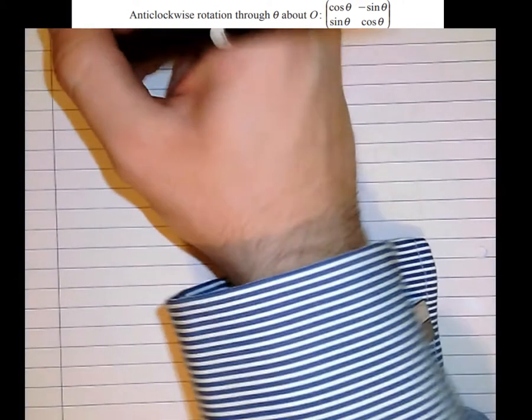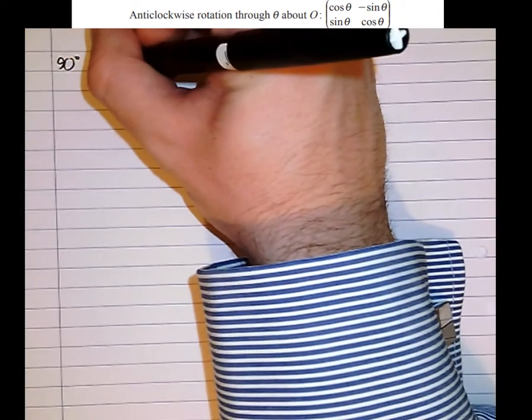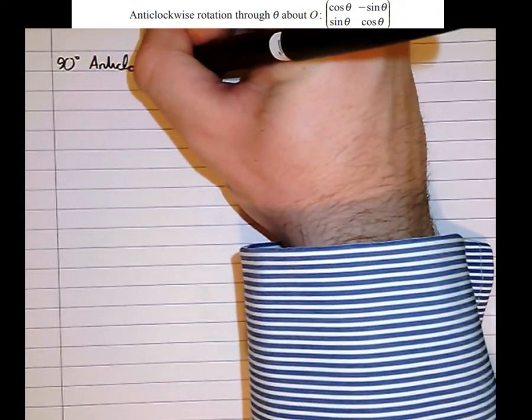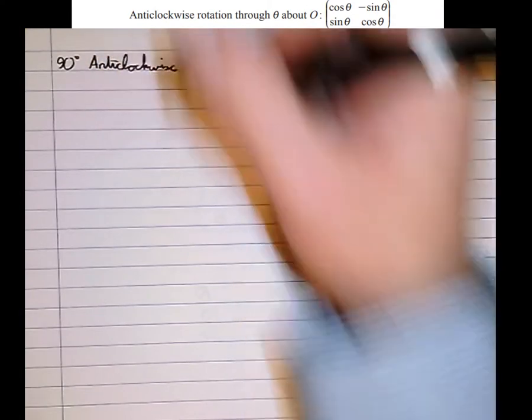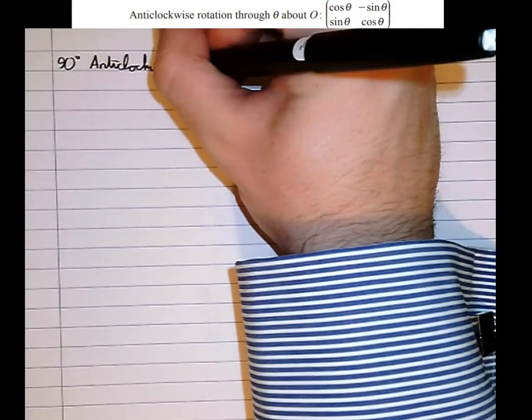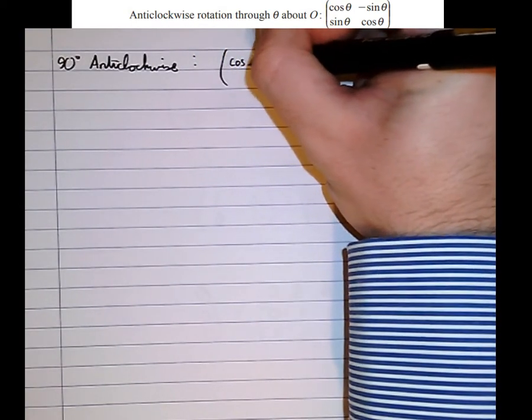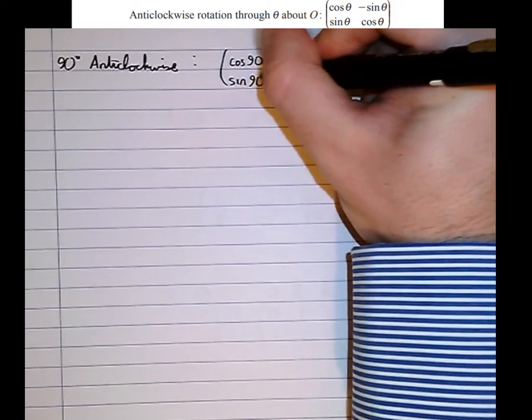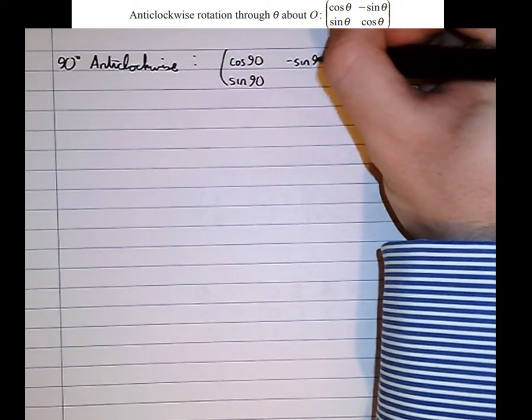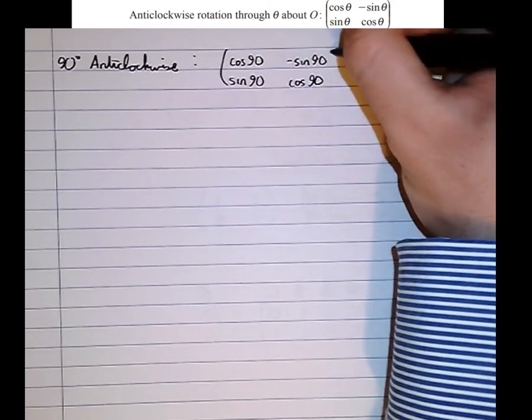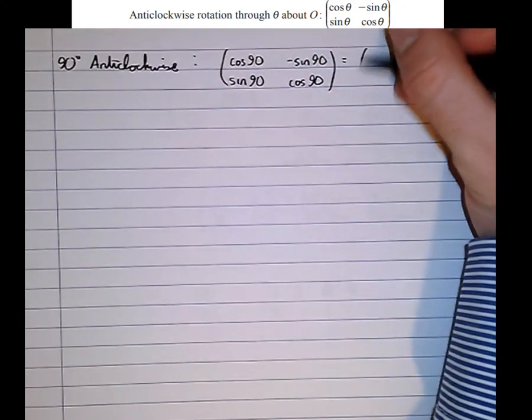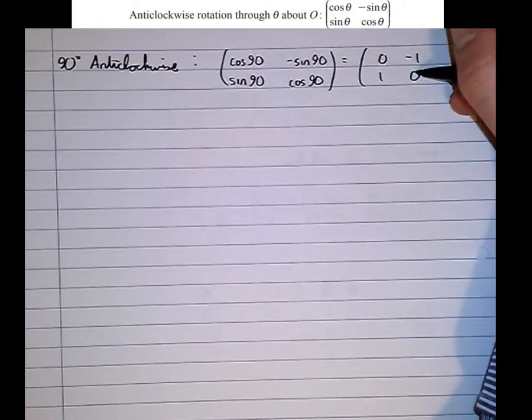So in order to get a particular angle of rotation, we just simply sub in the angle we want. Say we wanted a 90 degrees anticlockwise rotation. Just plug in 90 into that formula, so 90 degrees anticlockwise is cos 90, sin 90, minus sin 90, cos 90, which is equal to 0, 1, minus 1, 0.